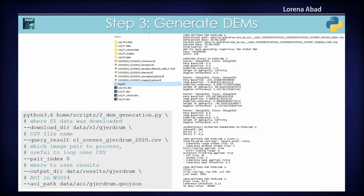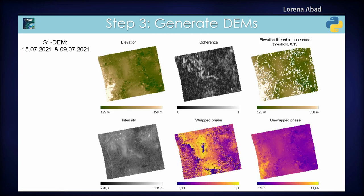This is how the products look. We get elevation and coherence — how matching the two images are, indicating how good the elevation values will be in each area. Higher coherence means a better match between the two images. You can also apply an elevation filter by a coherence threshold to remove low-coherence areas. We also have intensity, the phase, and the unwrapped phase.